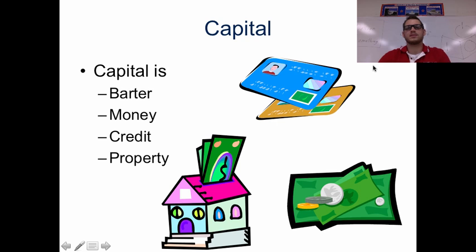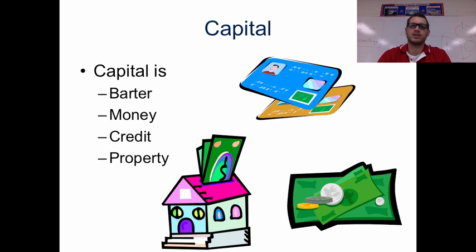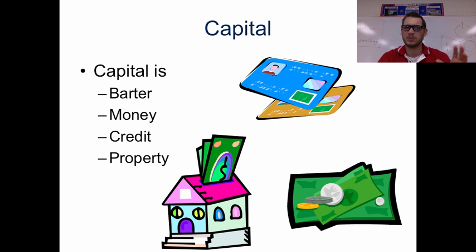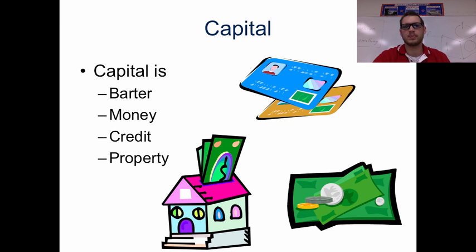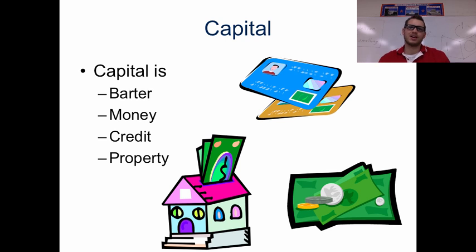Capital. Capital is not just money — it's more than money. It's to barter, which means to trade something for something else. A lot of you barter with your lunch. Think of credit cards and property — if you own property, what is it worth? You have capital; you have worth in it. Maybe you have a lot of trees, or property where you hunt deer.